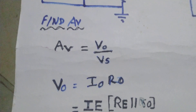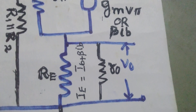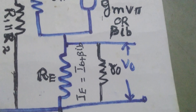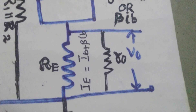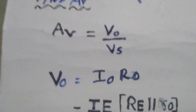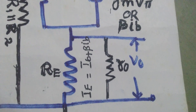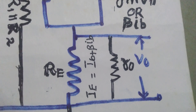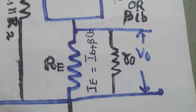Now we find the voltage gain AV = V0/VS. V0 = I0·R0 (output). Here, I0 is IE, and the capital R0 (output resistance) equals RE in parallel with small r0. So capital R0 = RE ∥ r0.